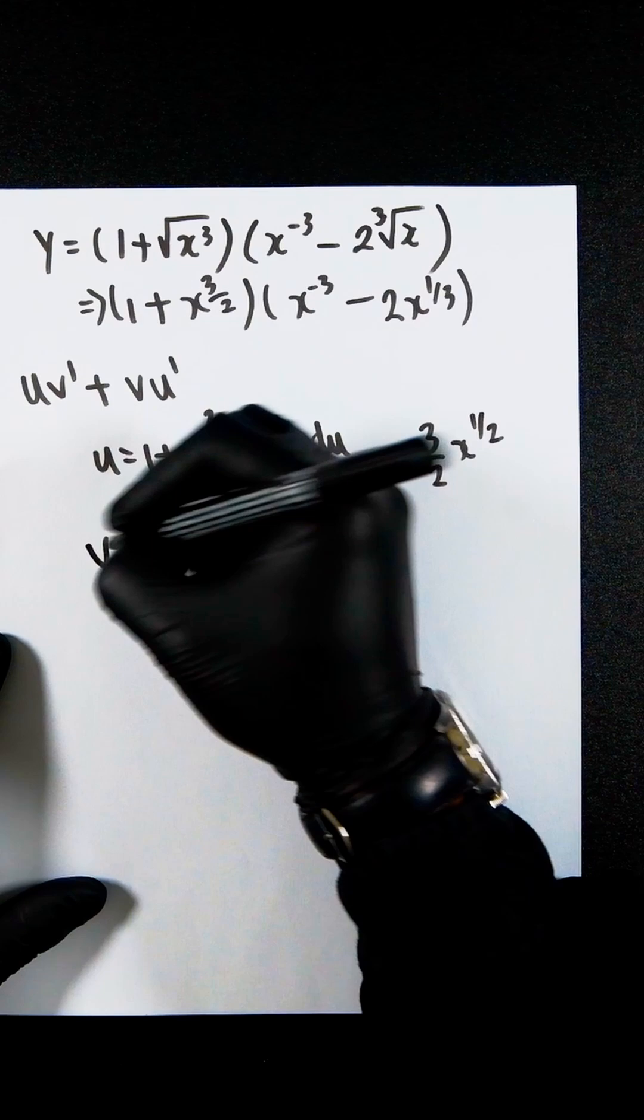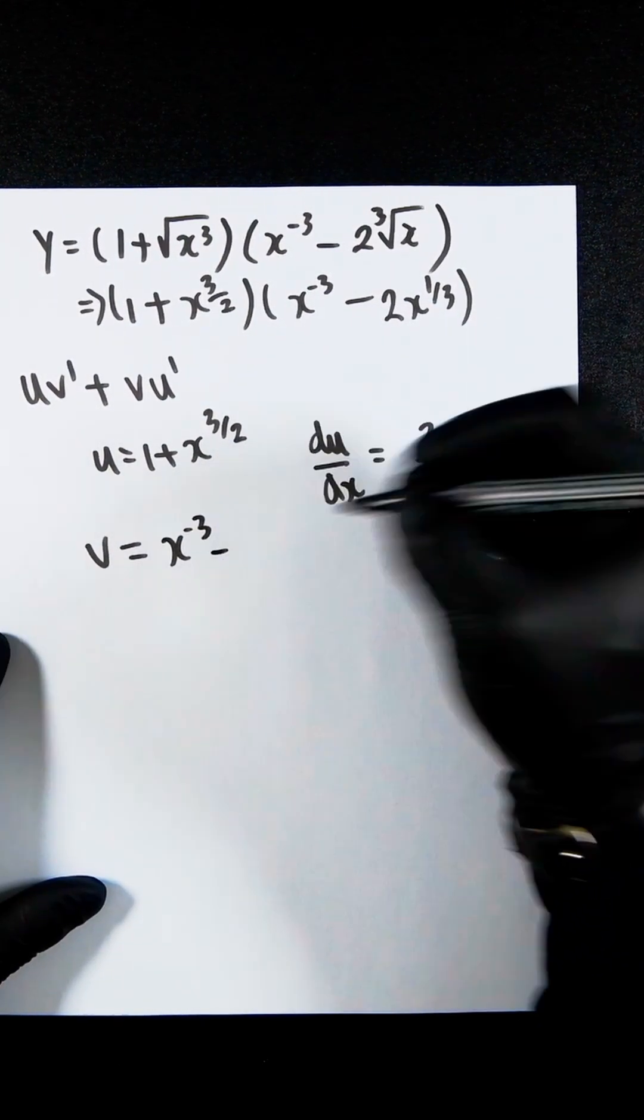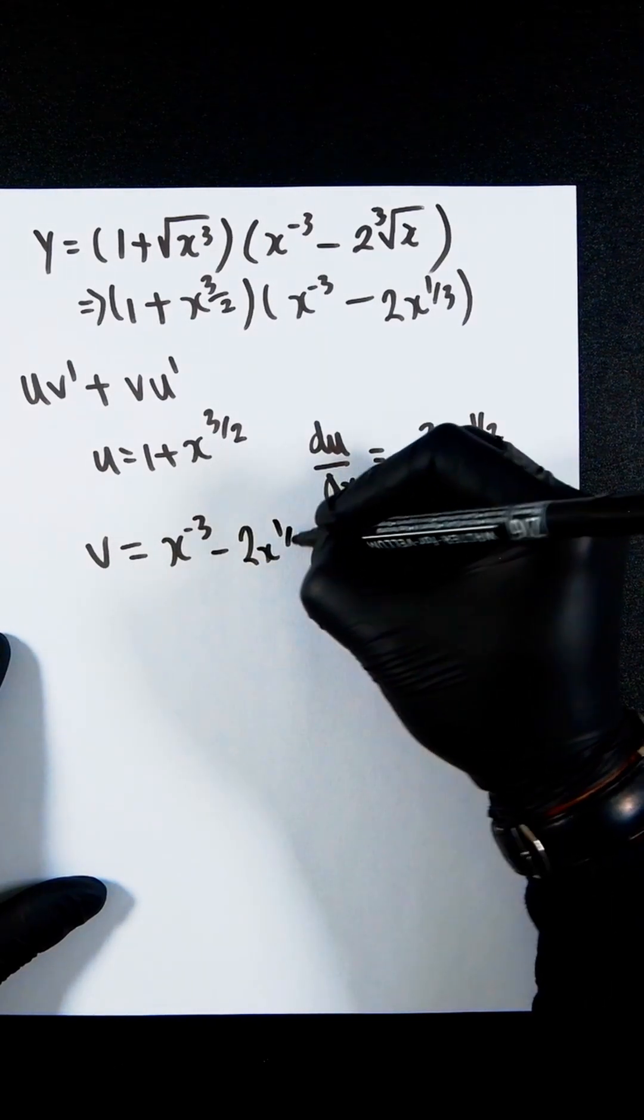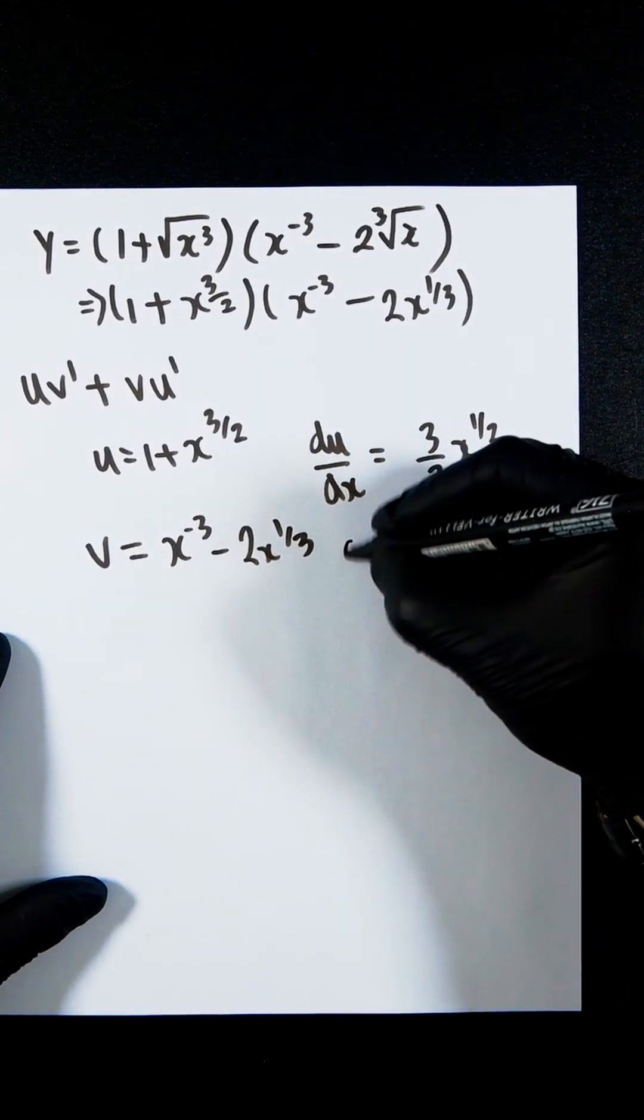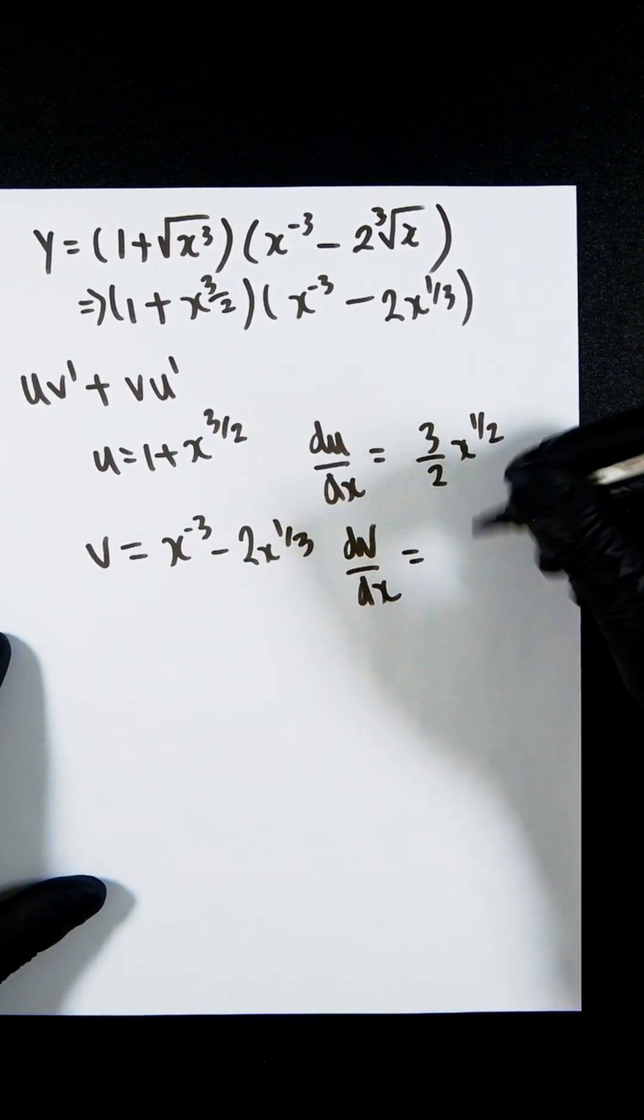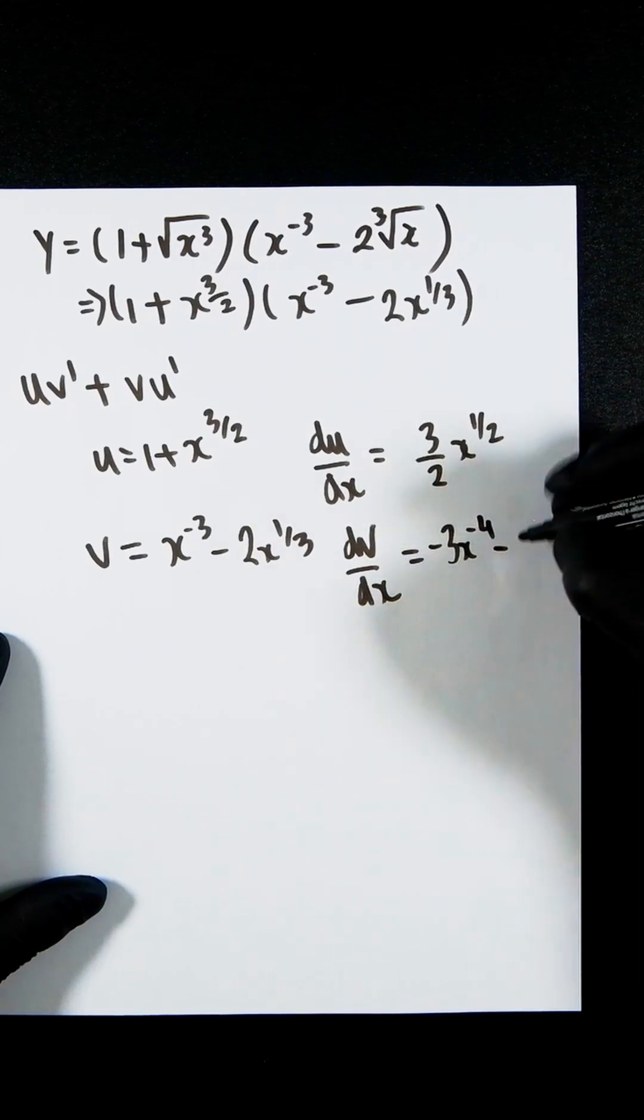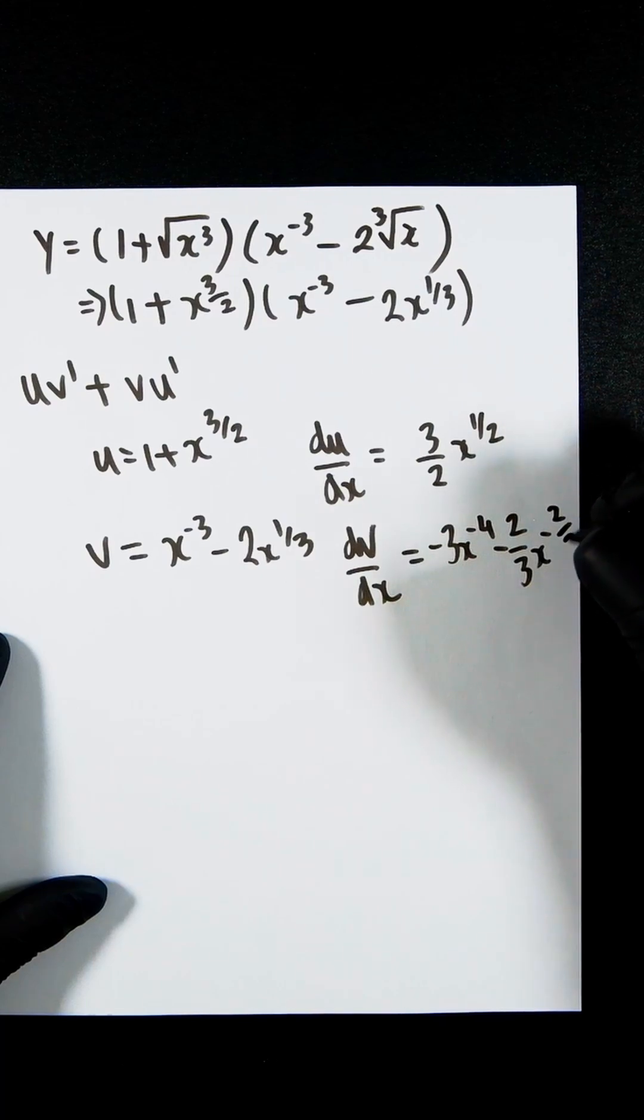And v would be x to the minus 3 minus 2x to the third. So dv dx would then be minus 3x to the minus 4 minus 2 thirds x to the minus 2 over 3.